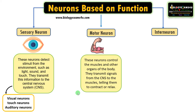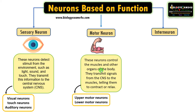As the term indicates, motor neurons control the movement of muscles and other organs of the body. These neurons often have long axons that extend from the cell body to the muscles. The signals from the motor neuron cause the muscles to contract, resulting in movement. Motor neurons can also be classified into two types: upper motor neurons and lower motor neurons. Upper motor neurons are located in the brain and send signals to the lower motor neurons in the spinal cord. Lower motor neurons then send signals to the muscles, leading to movement by contraction or relaxation of muscles.